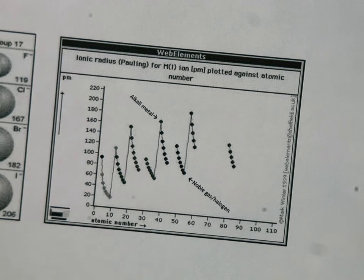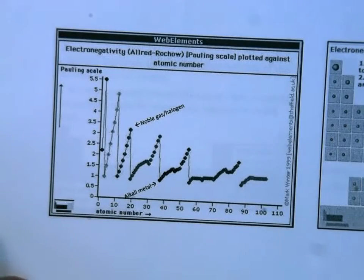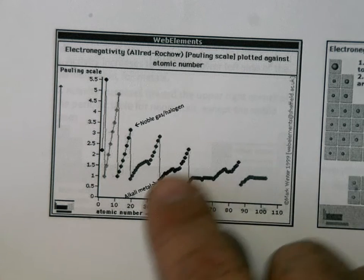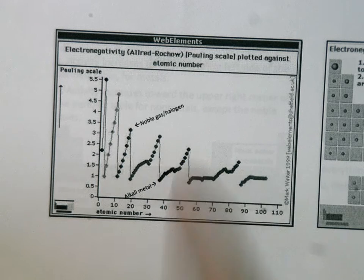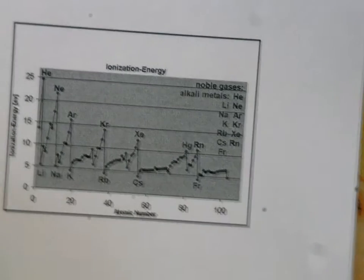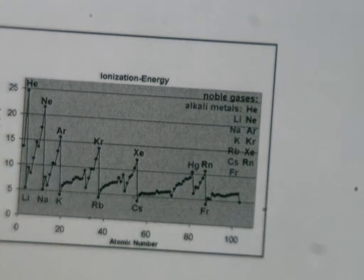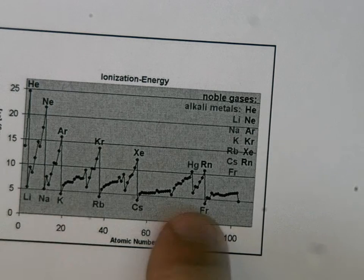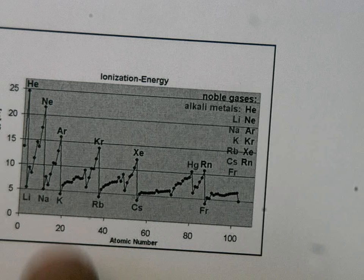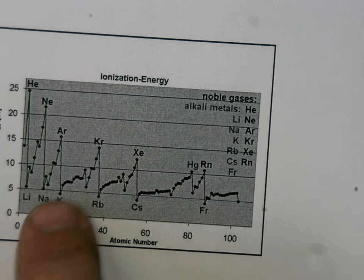Over here this is for ionization energy — again we see the same kind of trend. And here's electronegativity, which is a little bit different. Each of these periods starts low and ends up getting high. Electronegativity is how badly an atom wants to bond with another atom — how badly it needs electrons. For ionization energy, you can see a trend starting from the beginning of a period — the alkali metals — and they go up to a peak at the noble gas.